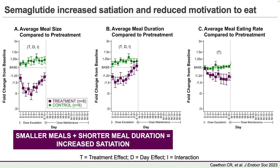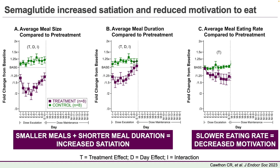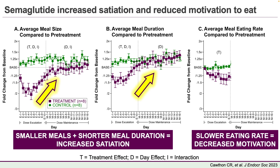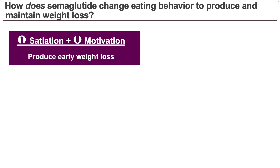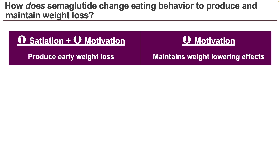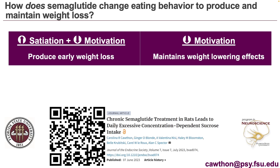My rats also ate at a slower rate, which suggests diminished motivation to eat. But over time, meal size and the amount of time spent eating increased, while the eating rate remained low. The increased satiation may help produce early weight loss with semaglutide, but it's that reduced motivation to eat that maintains weight loss since semaglutide continues for a long time.